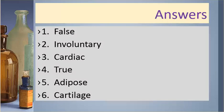Answers. Number one is false. Number two is involuntary. Number three is cardiac. Number four is true. Number five is adipose. Number six is cartilage.